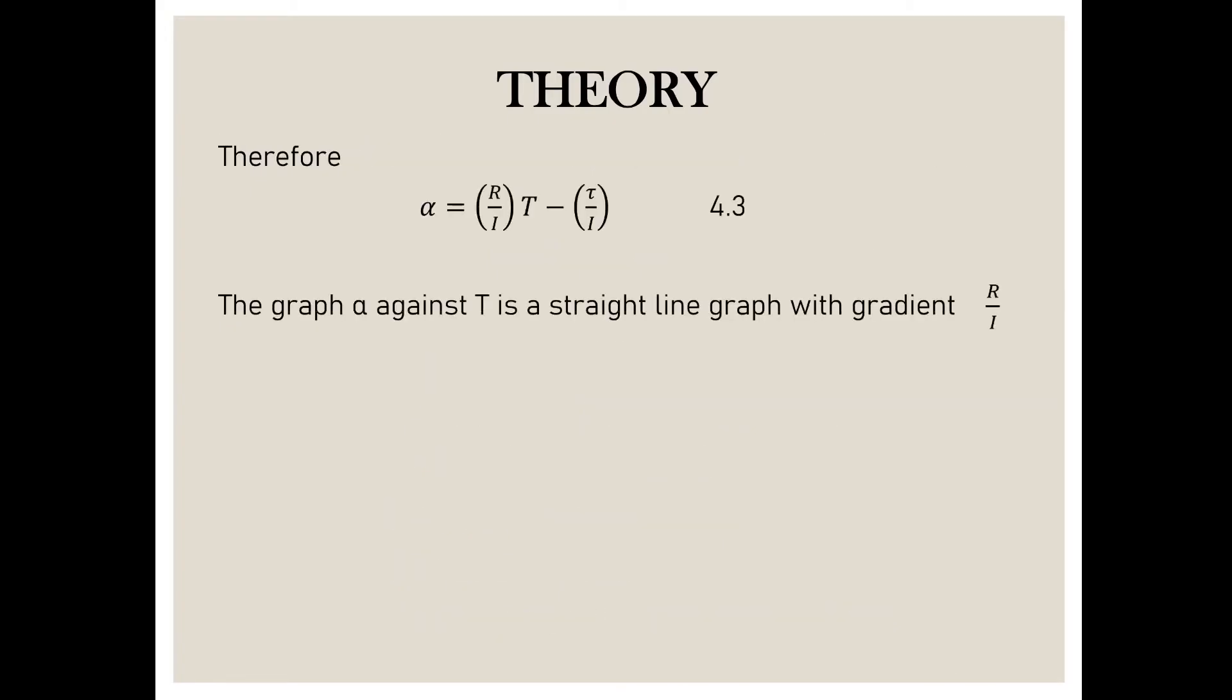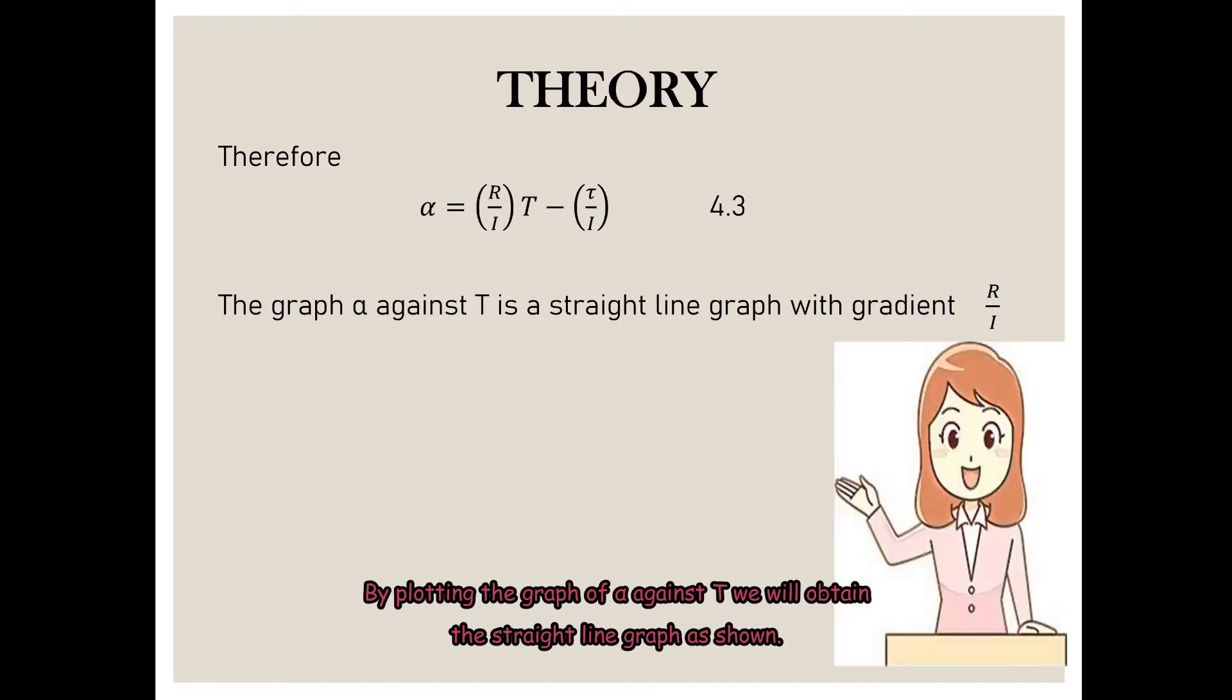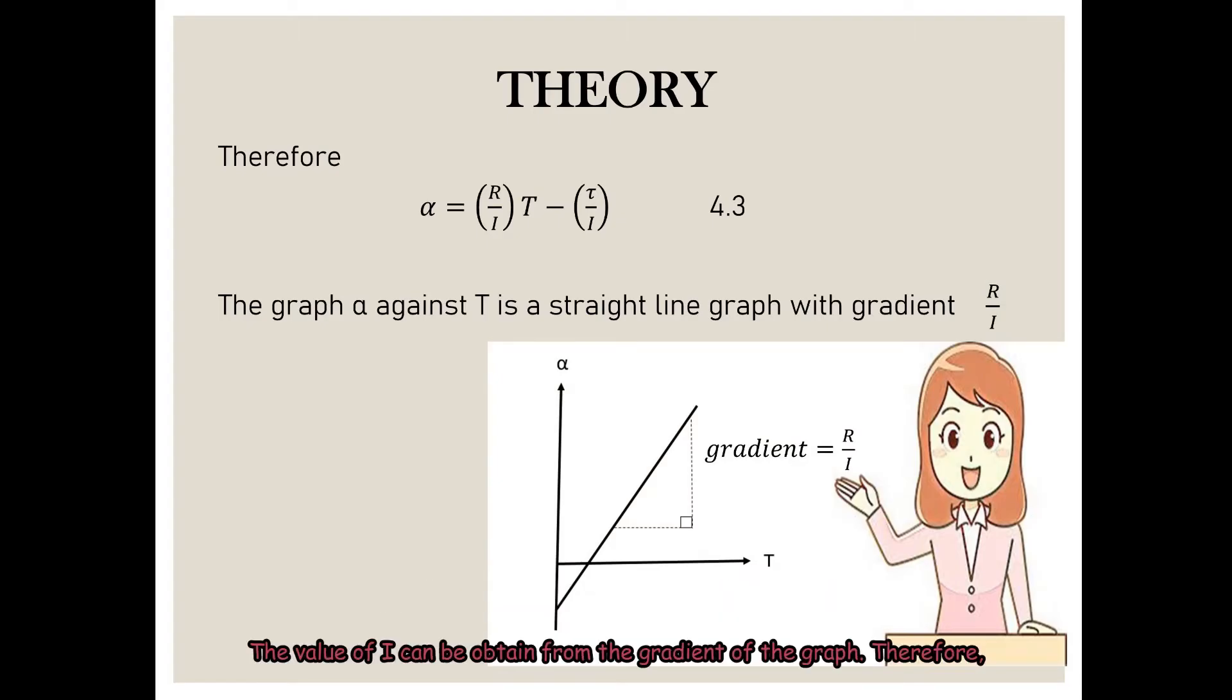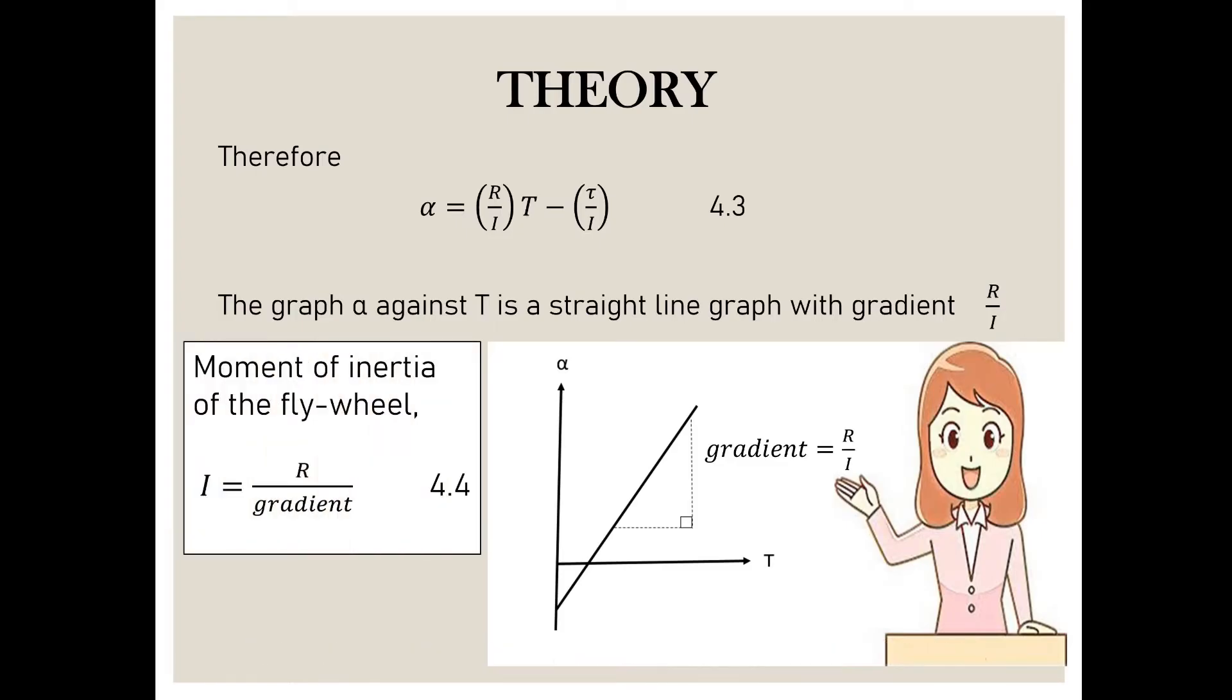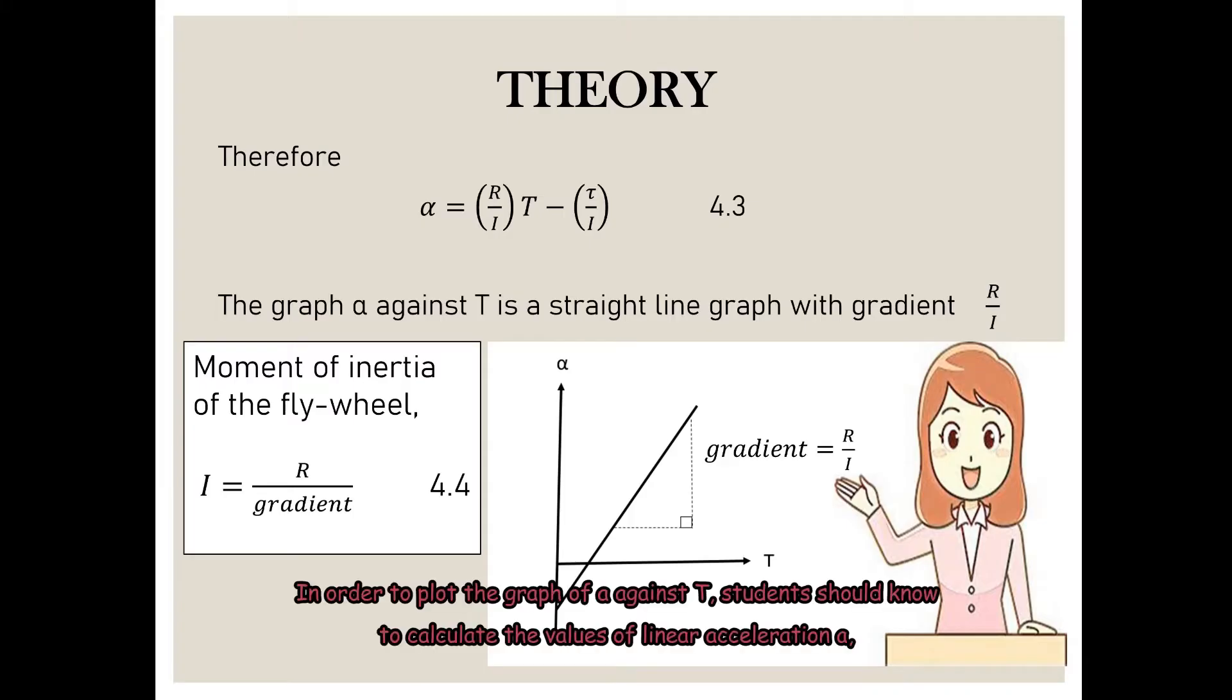Therefore, α is equal to RT over I minus τ over I. By plotting the graph of α against T, we will obtain a straight line graph as shown. The value of I can be obtained from the gradient of the graph. Therefore, I is equal to R over gradient.